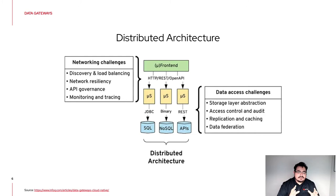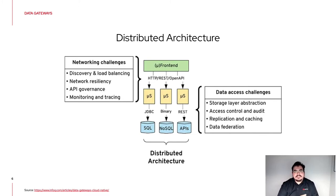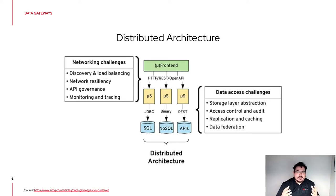The challenges are now moving from previous problems to new ones. The first type are network-related: you have a distributed architecture that needs to communicate and connect. You need to know where your services are deployed, so you need to do service discovery, load balancing, and handle situations where a service is suddenly unavailable. You can use direct service calls or APIs for better governance of your communication, and obviously you need monitoring and tracing to know what is happening in your communication layer.